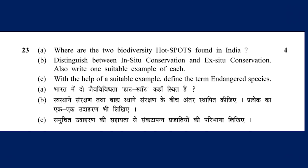The biodiversity can be endangered. In-situ conservation means conserving species in their natural habitat, for example protecting the area. Ex-situ conservation means protecting species outside their natural habitat — for example in a botanical garden or a zoo. We also need to define the endangered species with one definition and one example.